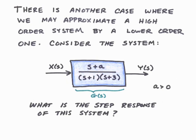Let's now consider another case where a high-order system can be approximated by a lower-order system. To do this, we'll do an example with a second-order system and show how it can be approximated as a first-order system. The system we're going to consider is shown in the block diagram in the center of the page. The transfer function is (s + a) divided by (s + 1)(s + 3). This is G. We're going to examine what the step response of this system is.